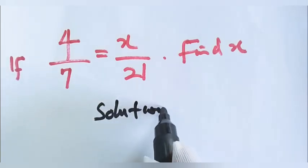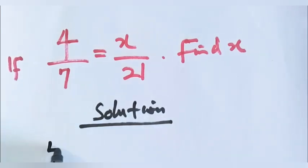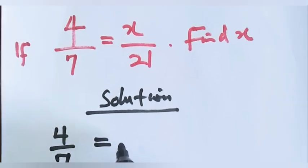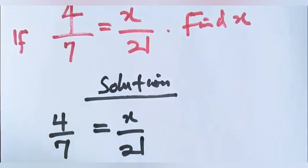Solution. 4 over 7 is equal to x over 21. So the first thing we should do here is cross-multiply. We'll cross-multiply like this.